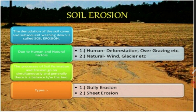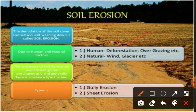We can classify the factors responsible for soil erosion into two parts: natural factors and human factors. An important human factor is deforestation, since it is done by human beings. A second human factor is over-grazing. Natural factors include wind and glaciers. The denudation of soil cover and subsequent washing down is called soil erosion, and an imbalance between human and natural factors leads to great soil erosion across different areas.